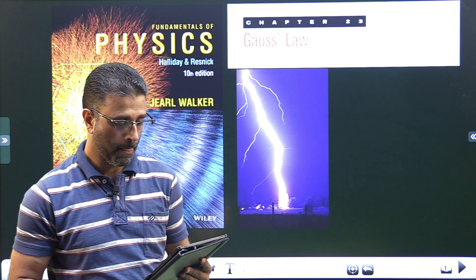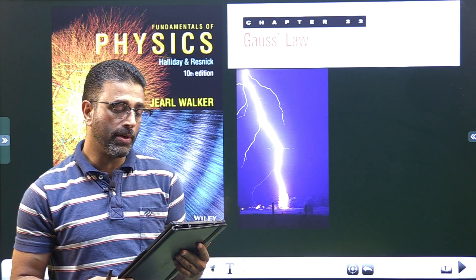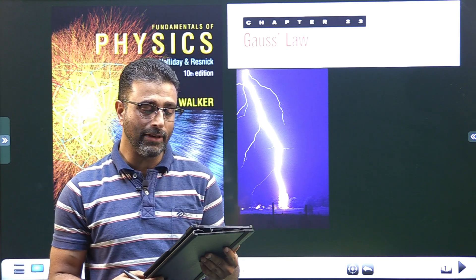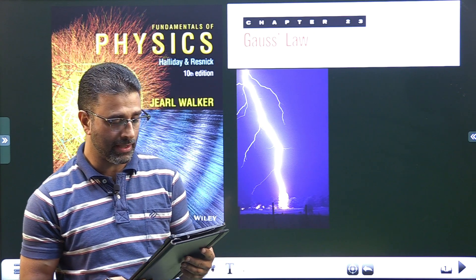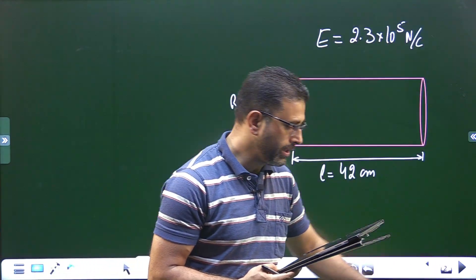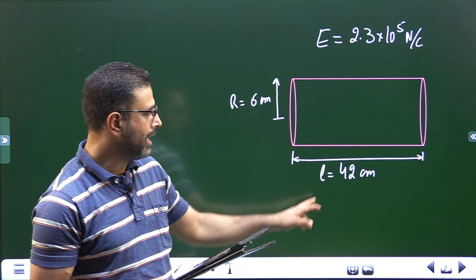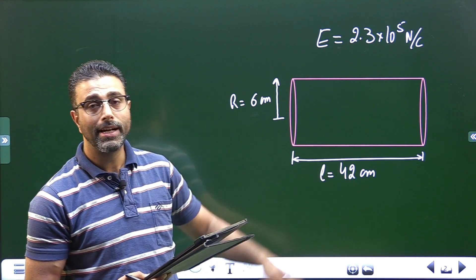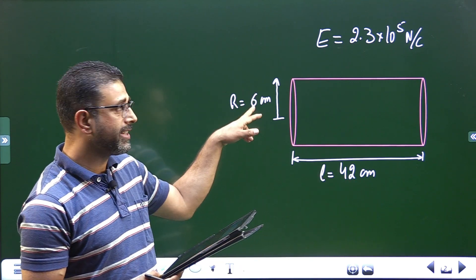The drum of a photocopying machine has a length of 42 centimeters and a diameter of 12 centimeters. We have this drum of a photocopying machine, length is 42 centimeters, diameter is 12 centimeters, that means radius is 6 centimeters.